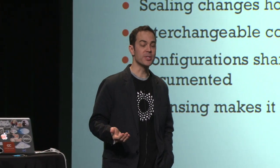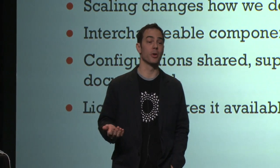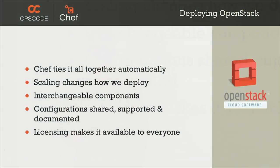Deploying OpenStack is done with cookbooks. We have cookbooks for all the major pieces, and Chef is going to tie everything together. One of the key features of Chef is our use of search — rather than having to know in advance how all your machines talk to each other, Chef is going to use search.